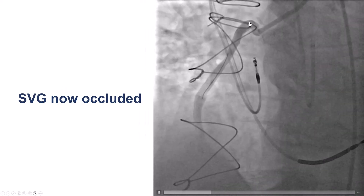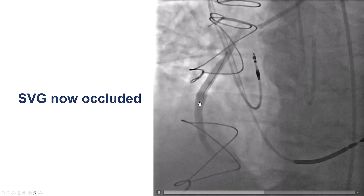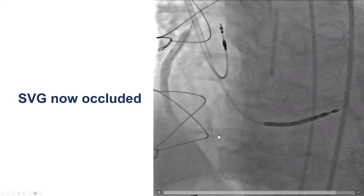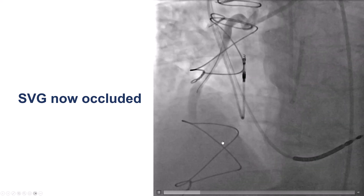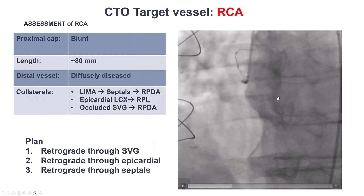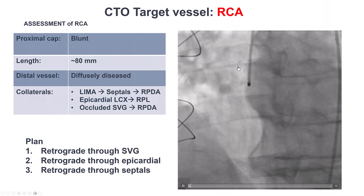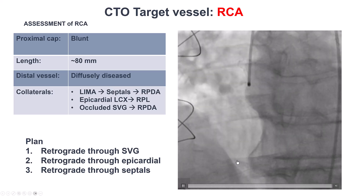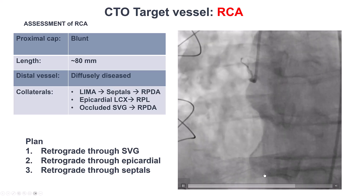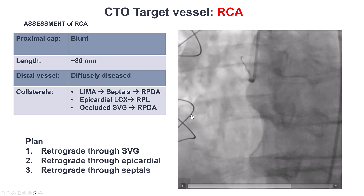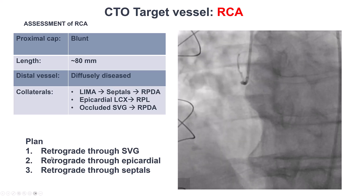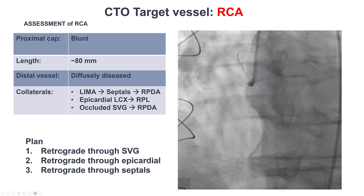The patient came back for the procedure and when we performed coronary angiography, we found that the bypass had now occluded. What we have here is an ostial RCA CTO with a blunt stump. The occlusion is essentially the entire length of the RCA, with reconstitution of the PDA and the posterolateral through epicardial collaterals. There is no filling through the vein graft now, but there are some septal collaterals.